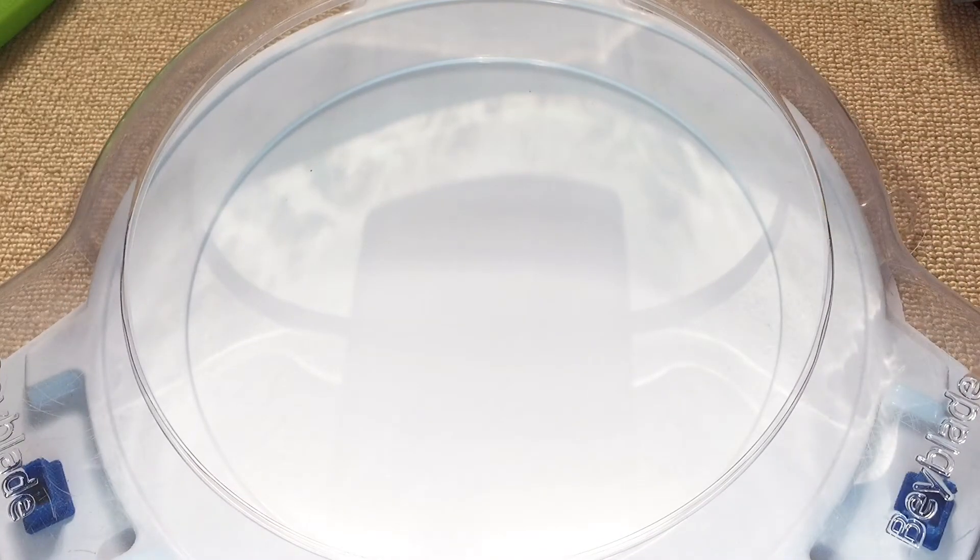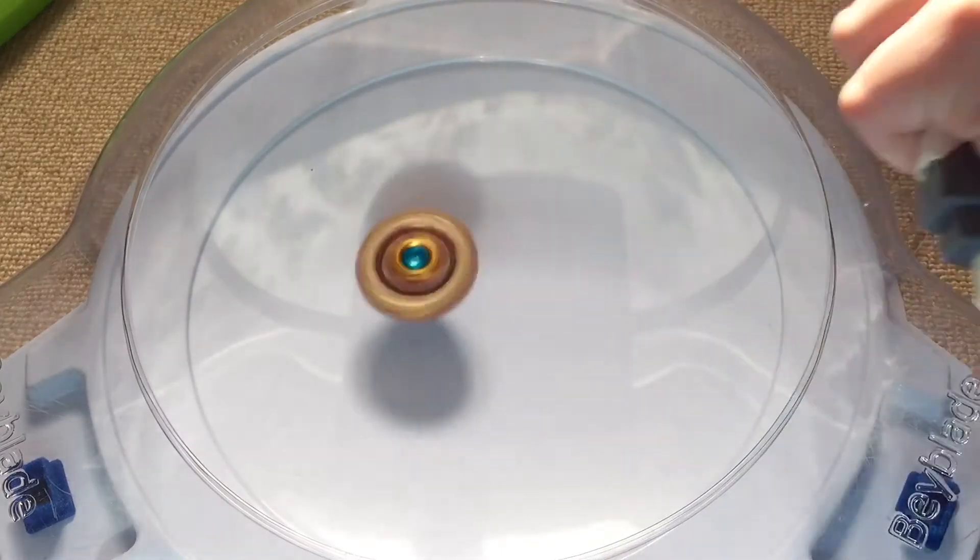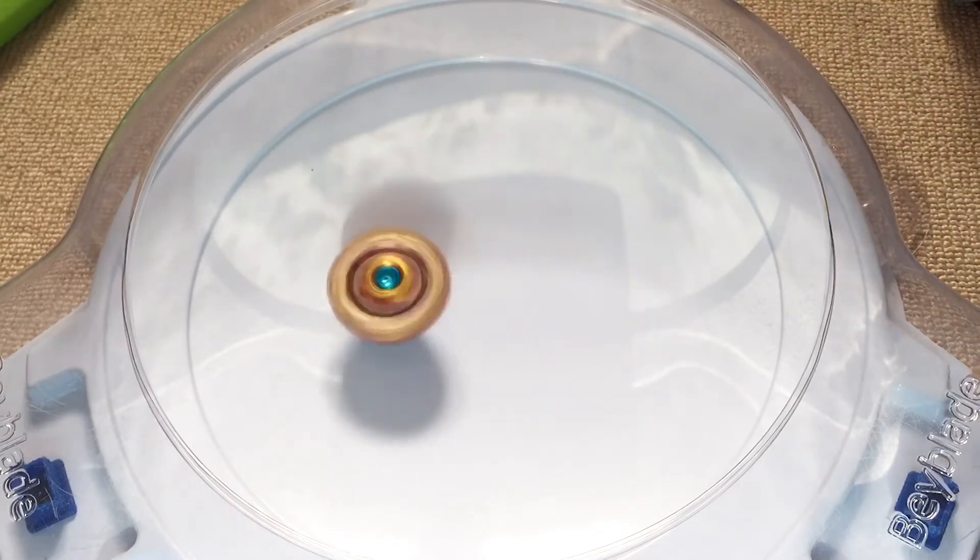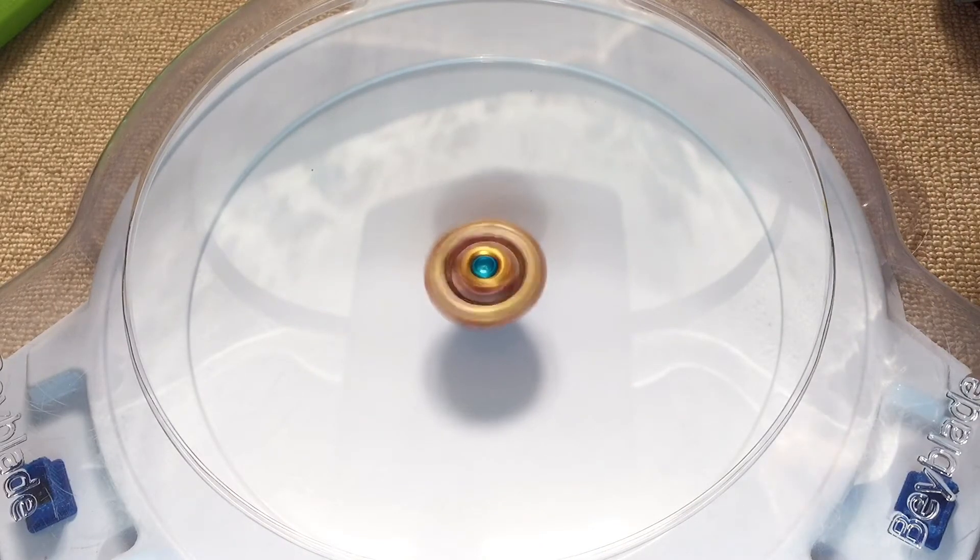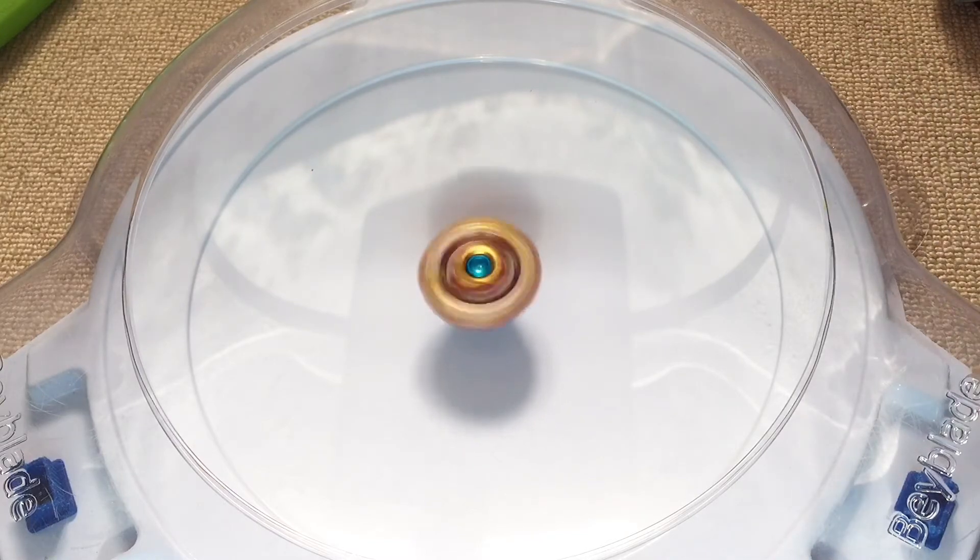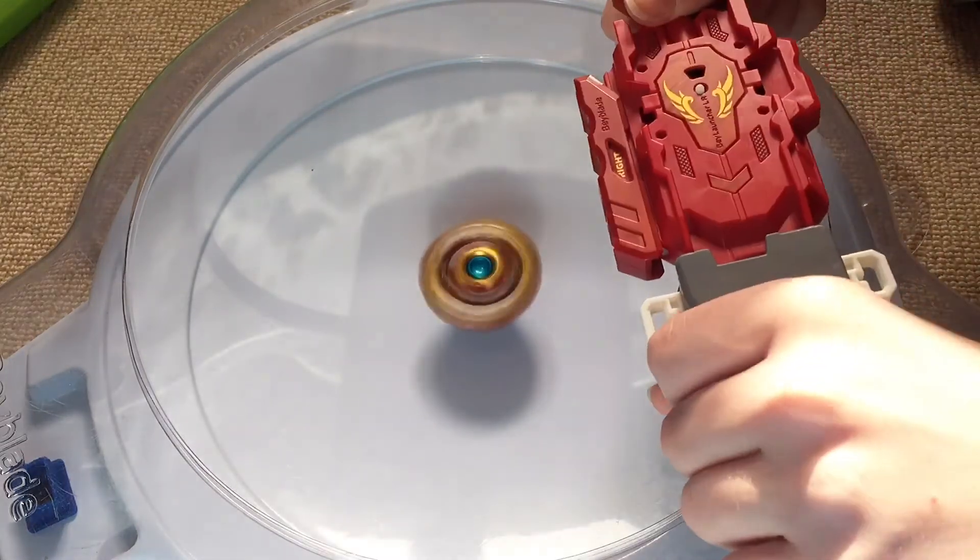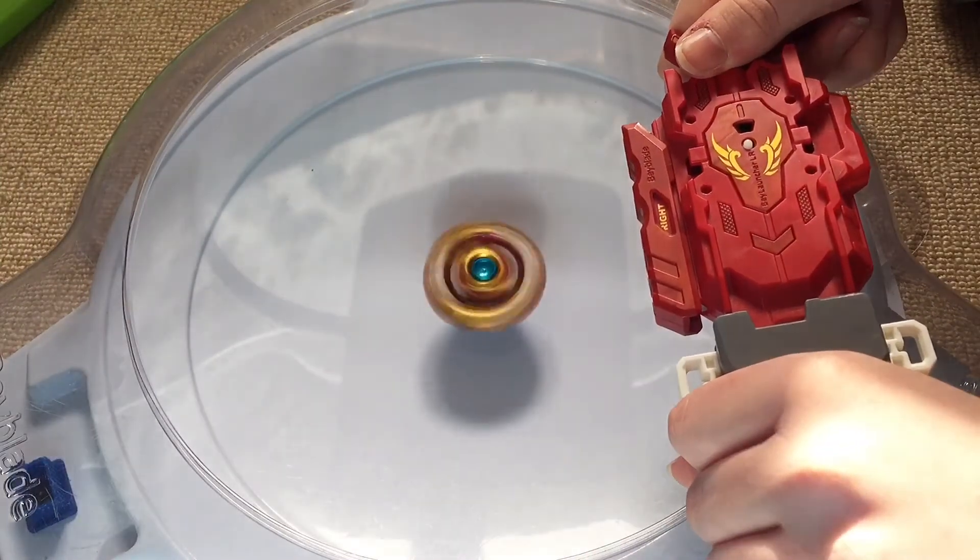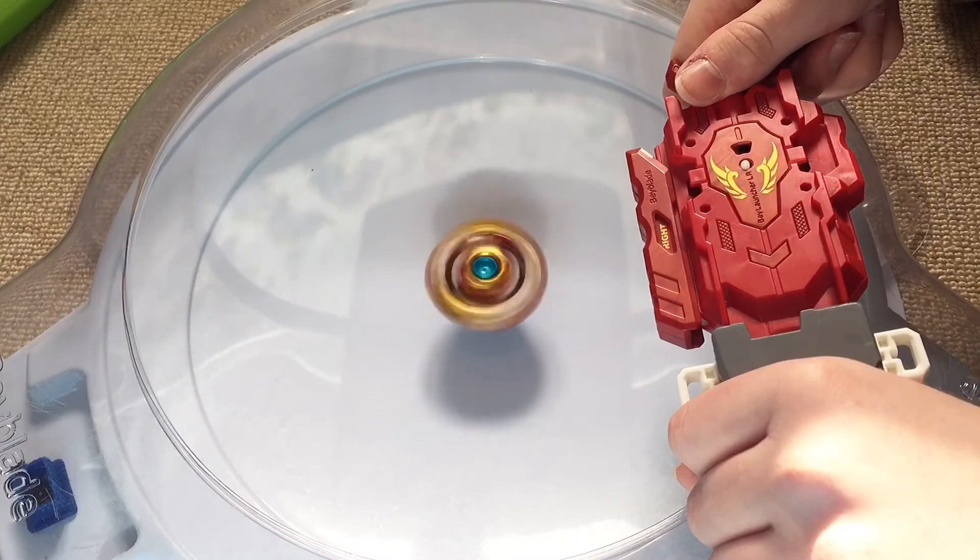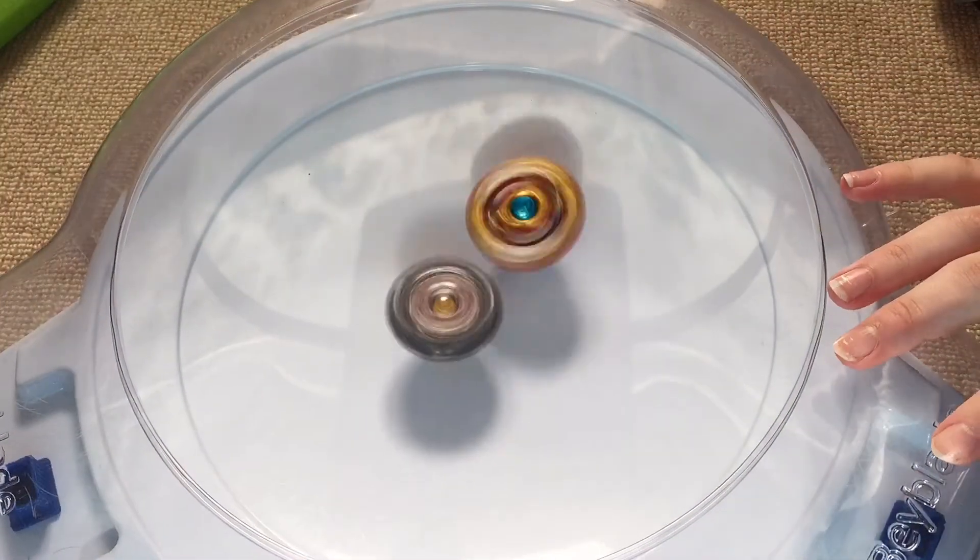So we are going to now move on to Spriggan Requiem in Right Spin Defense Mode, and at the end we're going to also test it against a spin steal combo that I made. And fake combo, let me just give this combo a bit of a chance and let Requiem spin for a little bit. 3, 2, 1, go shoot.